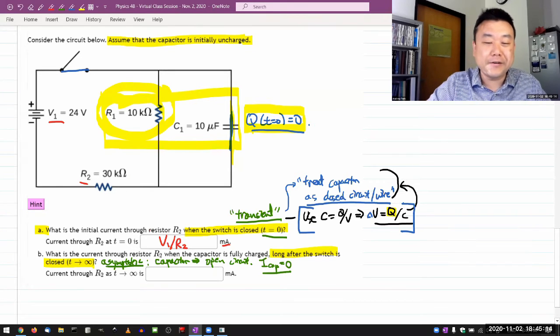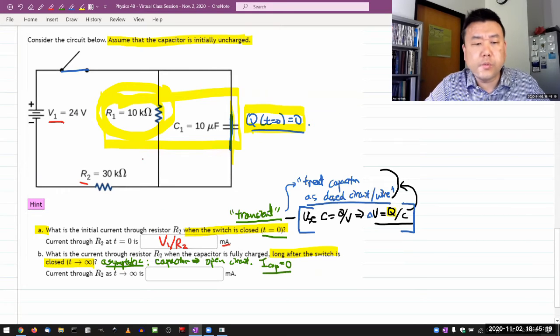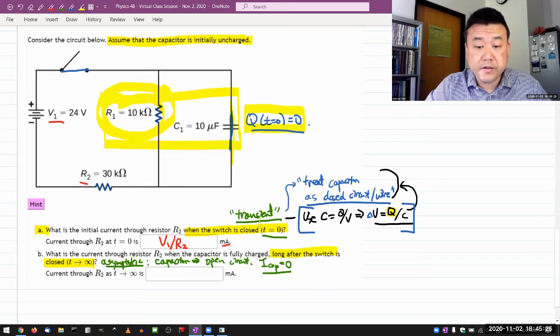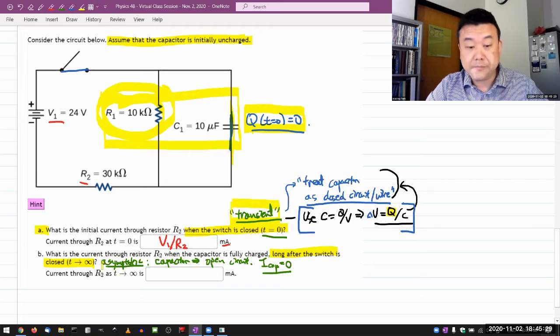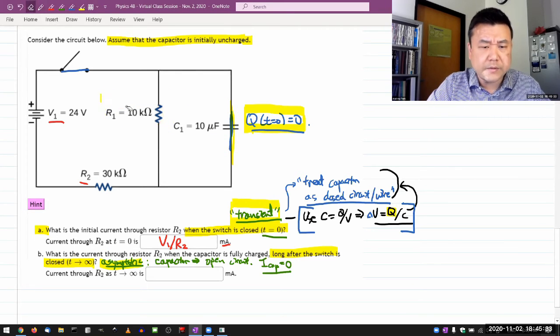So, this is why it's much simpler to deal with capacitors as, for these special cases of where it's either, it's a transient behavior, or now part B, the asymptotic behavior. Asymptotic behavior will be similarly simple enough.